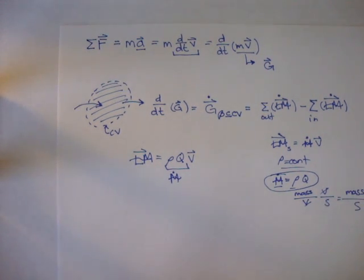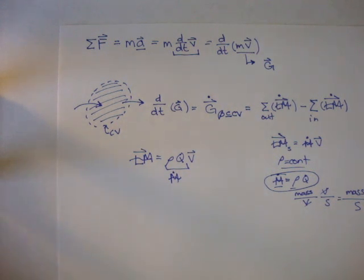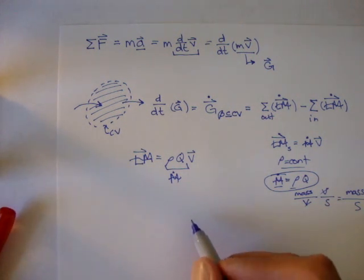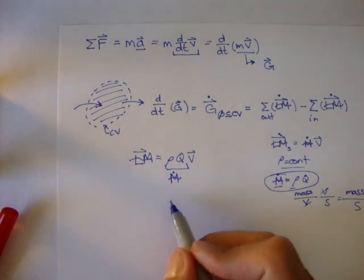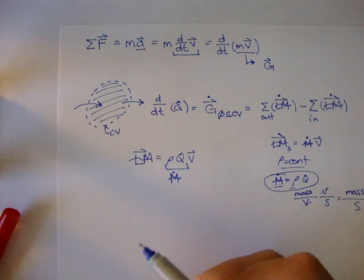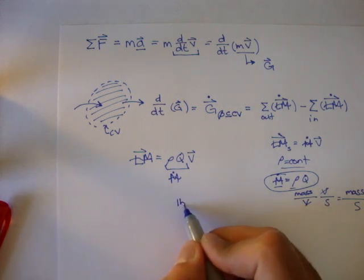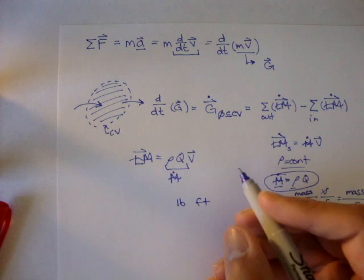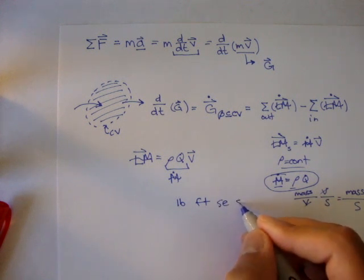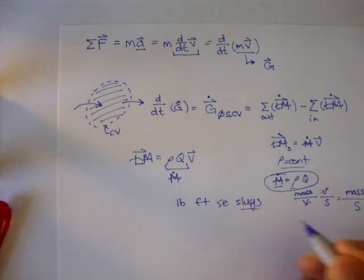So this might be a little confusing. Let's jump into an example and see how this kind of works out. And when you're solving these types of problems, make sure if you're in metric unit, you're using your standard kilograms and seconds, and if you're in the US customary units, you're using pounds, seconds, and then for mass you would use slugs.